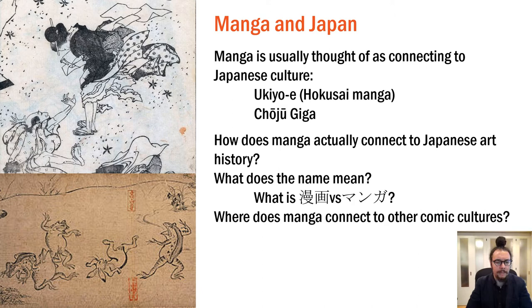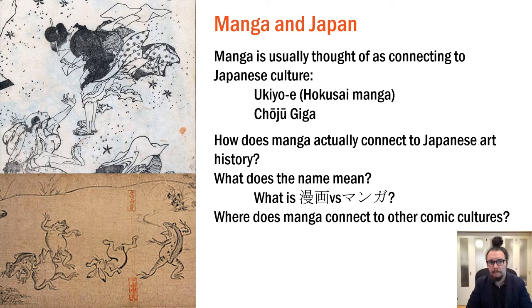When we talk about manga, it is often connected to Japan and a particular visual culture. This is often connected to ukiyo-e such as Hokusai's manga, and to earlier history going back to the 12th century such as Choju Giga. If manga is connected to Japanese art history, what is its exact connection? And what about the name manga itself — Hokusai's manga uses the kanji, while contemporary manga is often written in katakana. Is there a difference, and what are the nuances and histories of that?